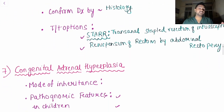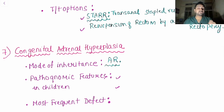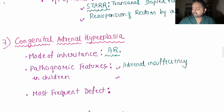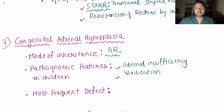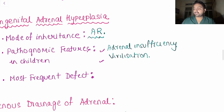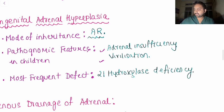The next topic is congenital adrenal hyperplasia. The mode of inheritance is autosomal recessive. The pathognomonic features in children are adrenal insufficiency and virilization. The most frequent defect seen is 21-hydroxylase deficiency.